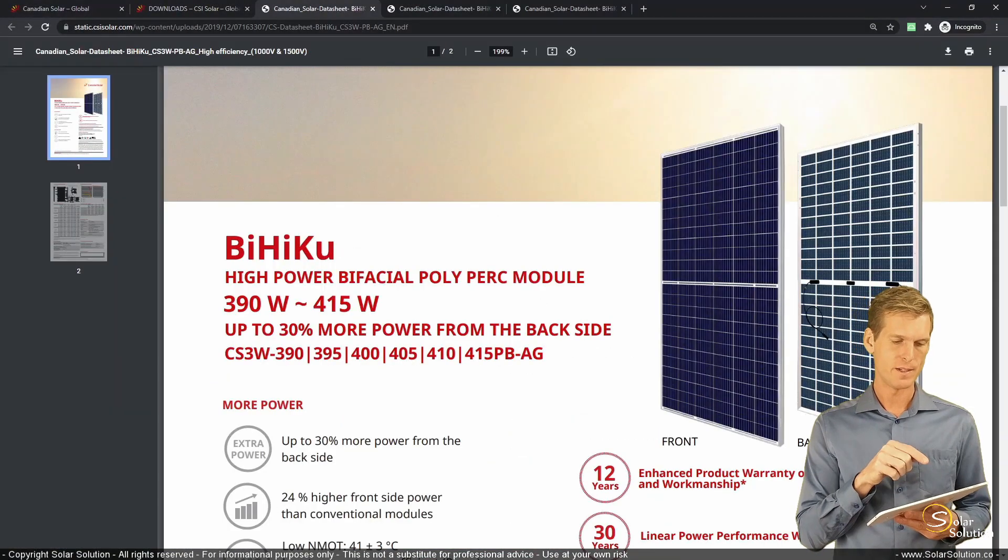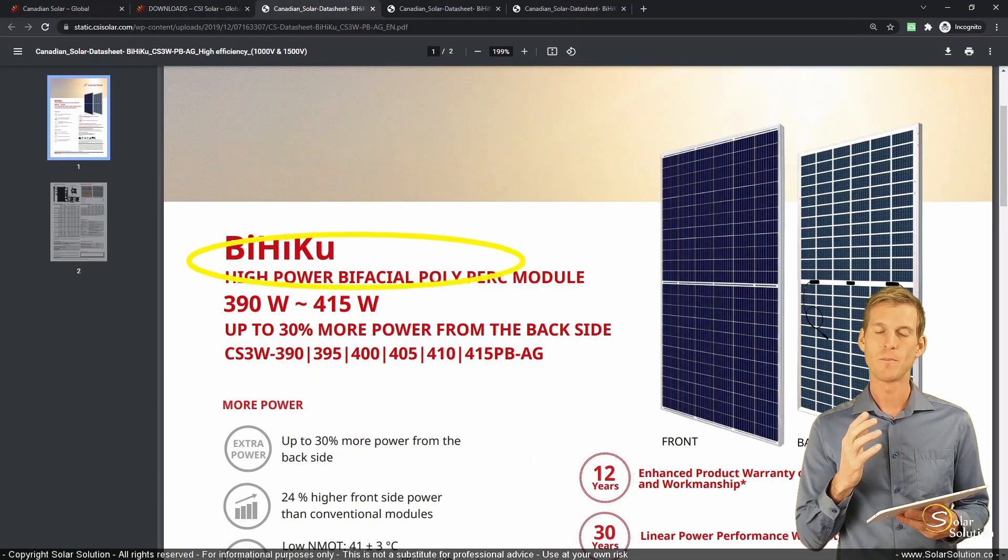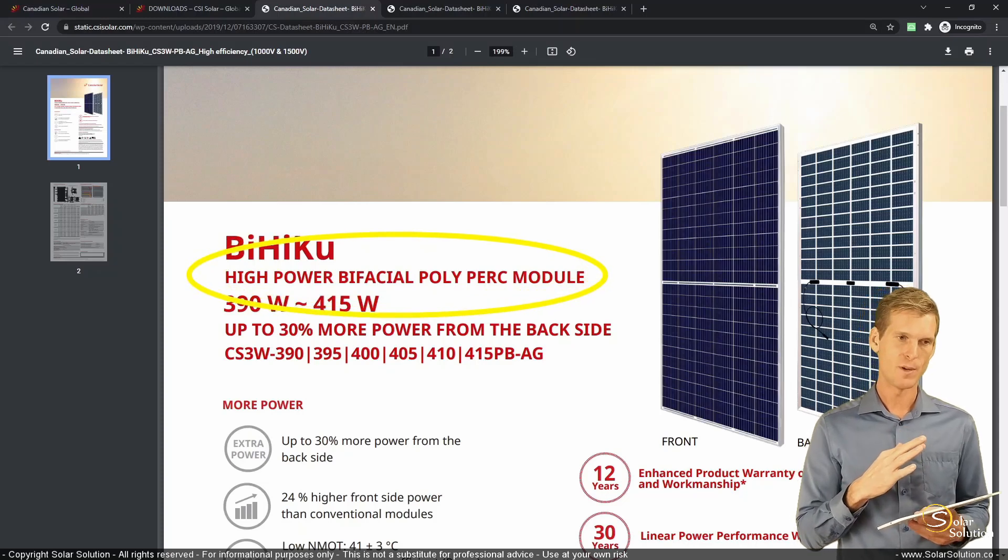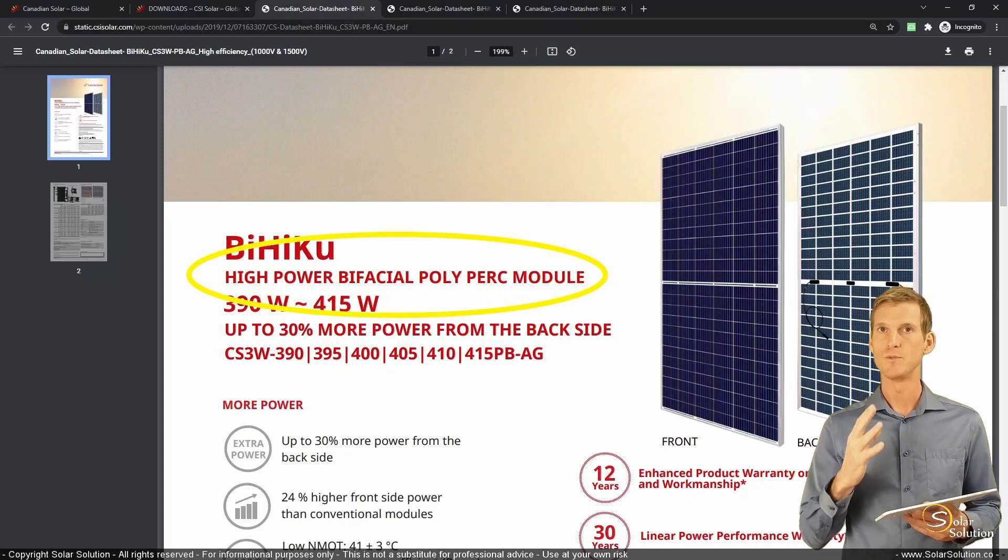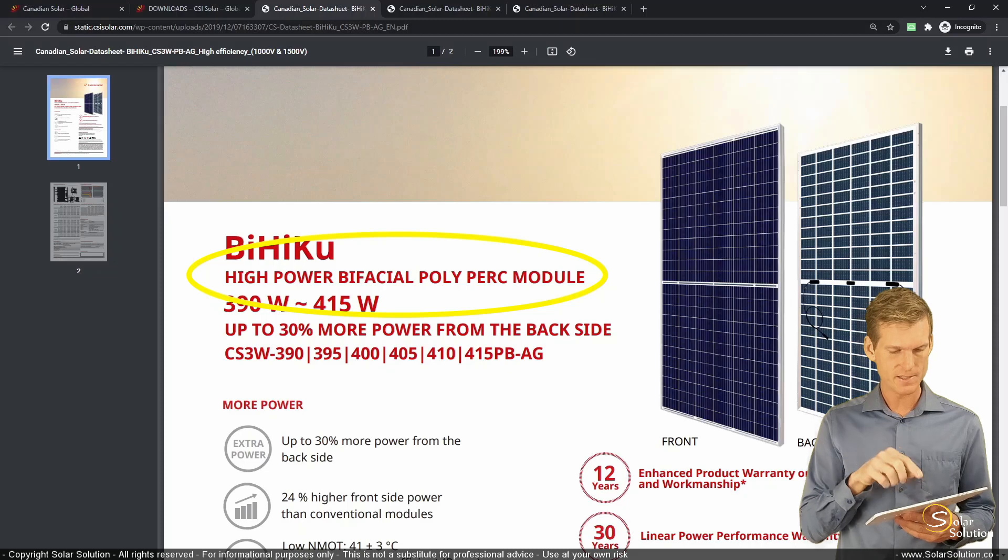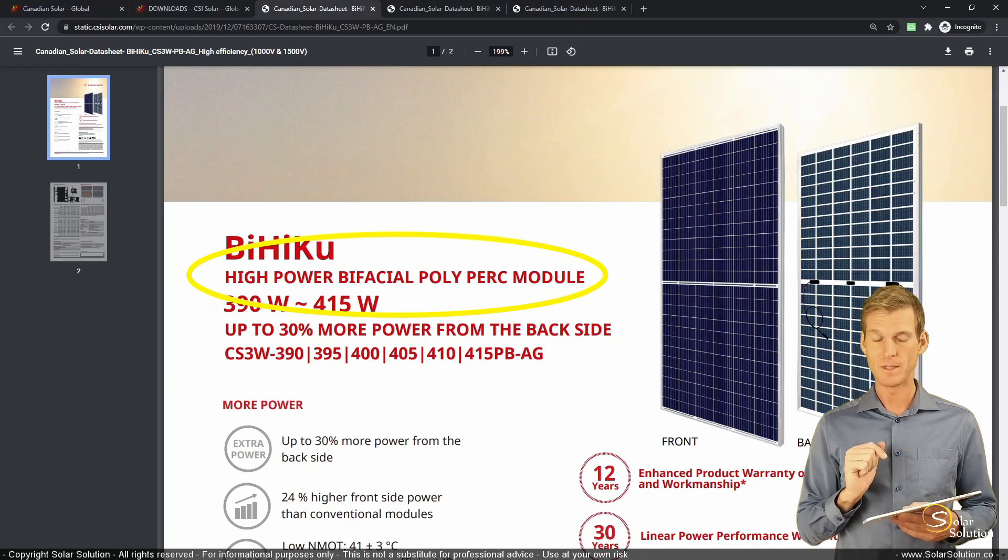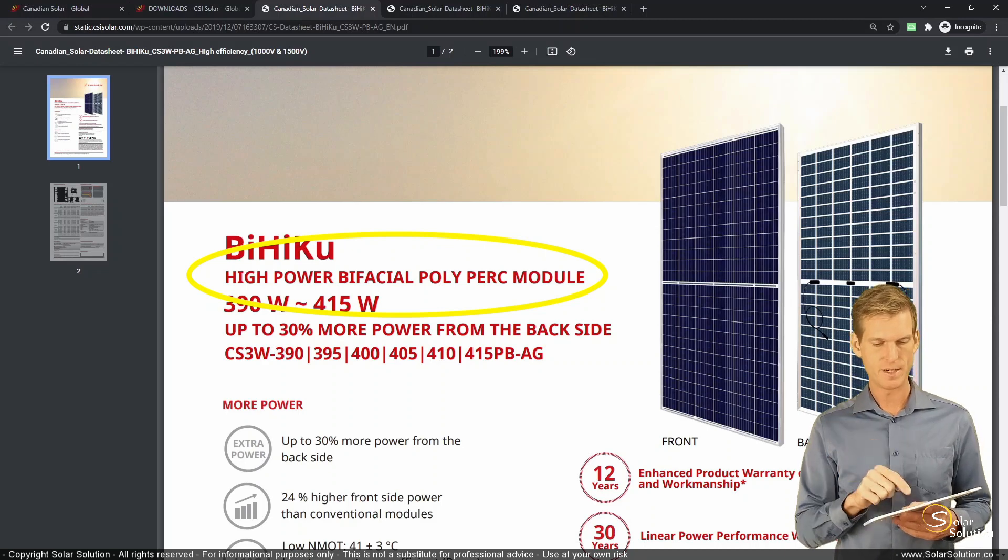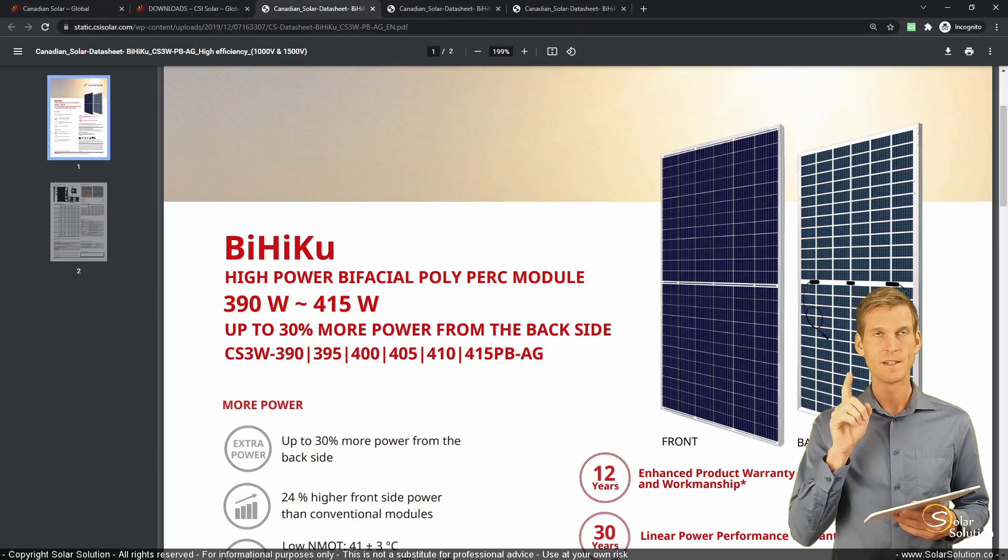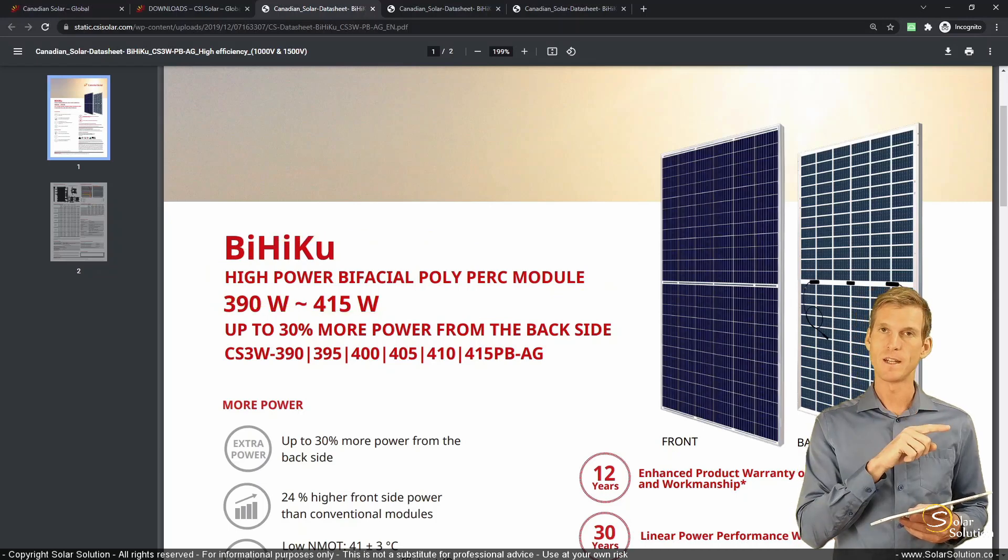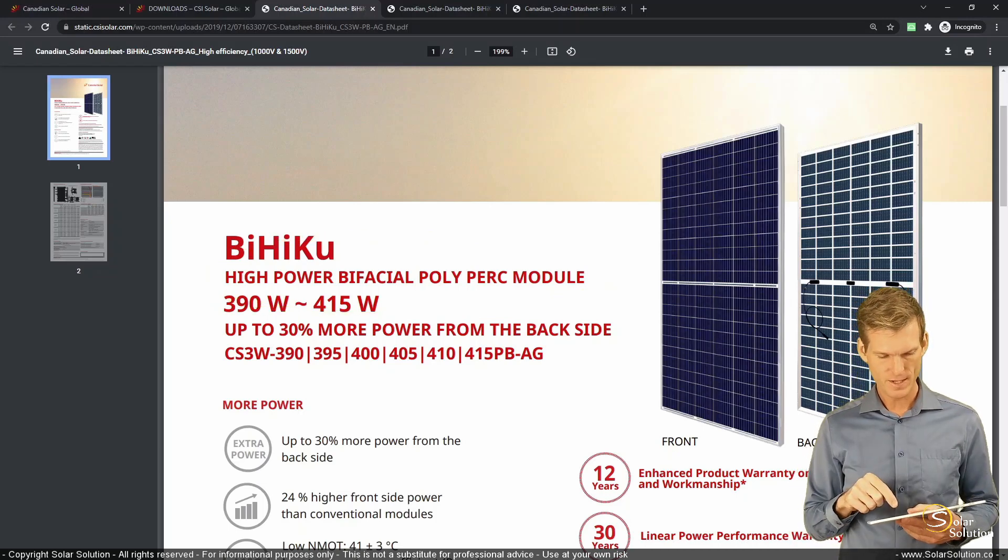It's high power. That's just a relative term. You could say that it's got a relatively high power output compared to other panels due to its size. It's bifacial. We understand that. It's a polycrystalline panel. We understand as well. It's got the PERC, the passivated emitter rear contact. So that's great as well. A module. We understand the difference between a photovoltaic cell and a photovoltaic module.